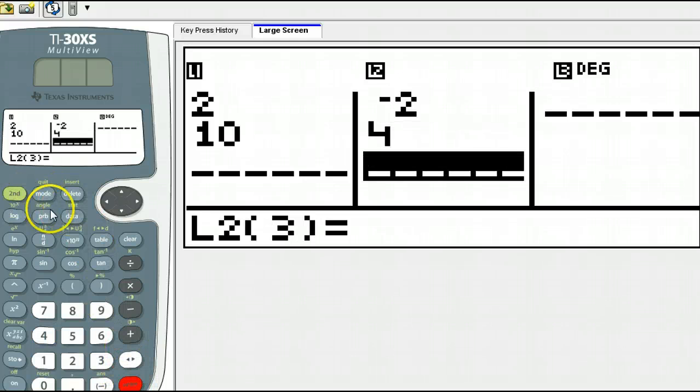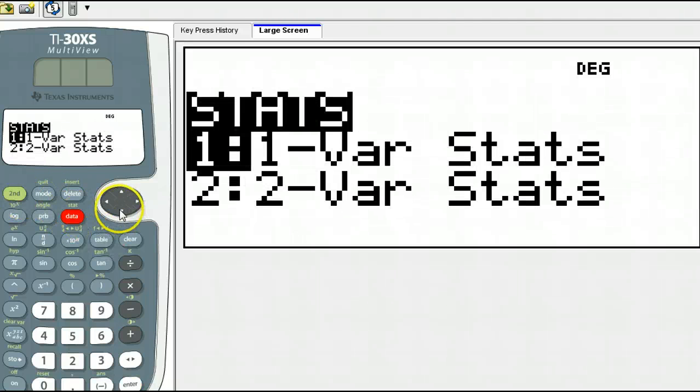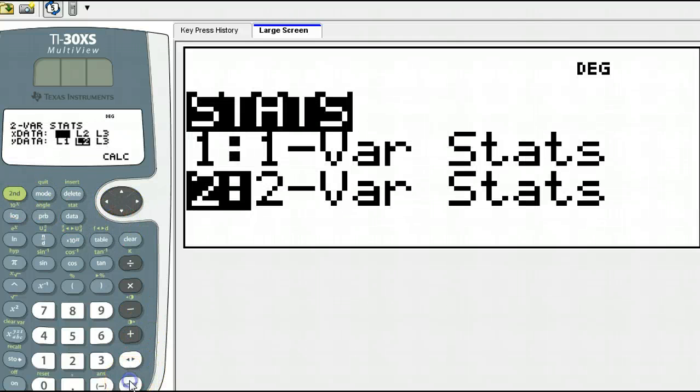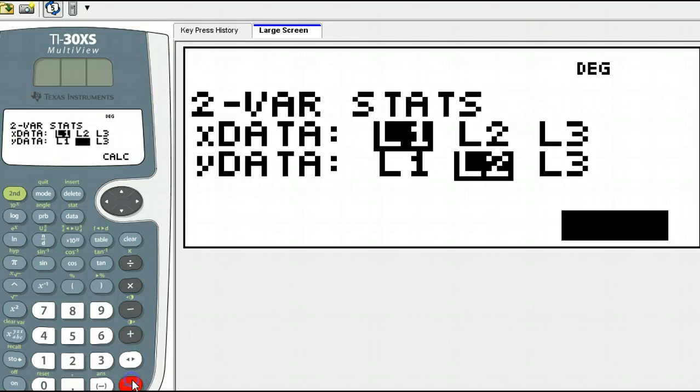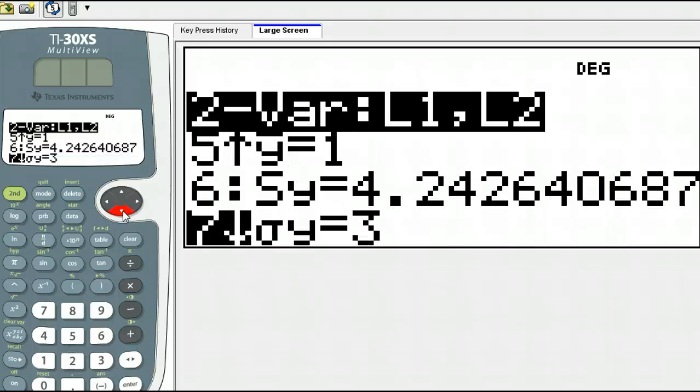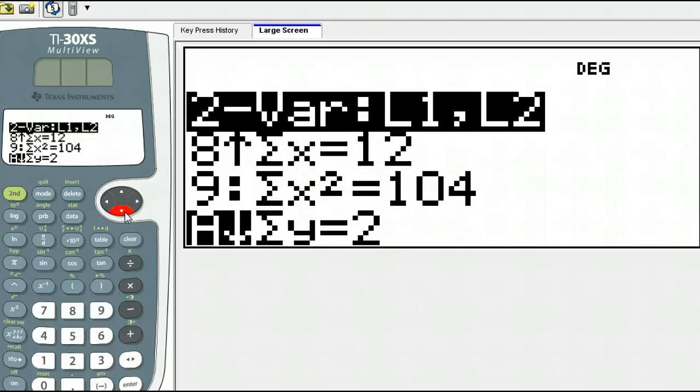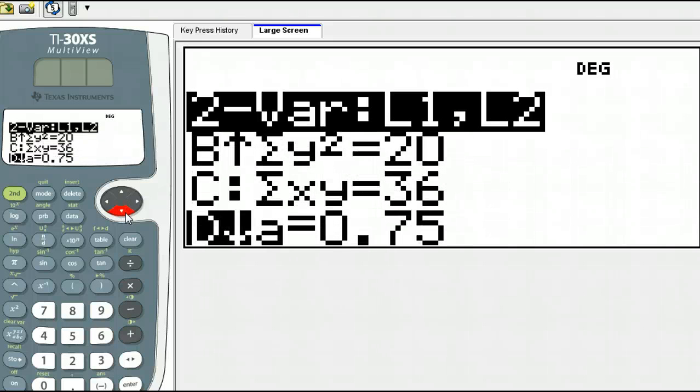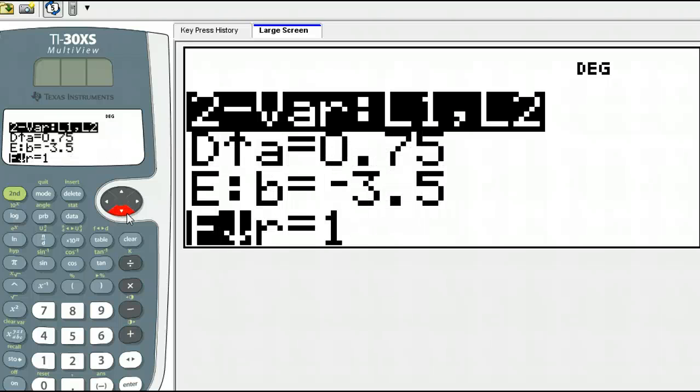And again, second data to get to the statistics, so second data, we want two variable statistics, just hit ENTER, and then scroll down until you see that little ABR. Here it comes, and it's the A value that is the slope, that 0.75.